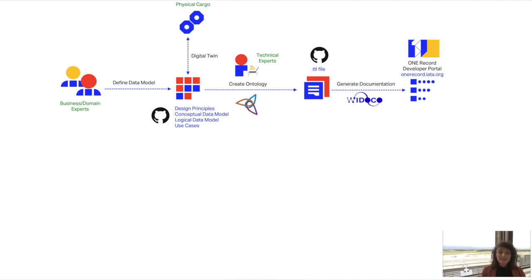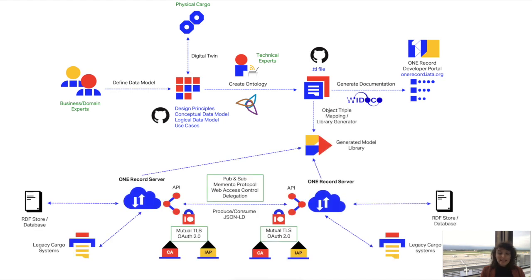These documents are open source and free to access. A group of technical experts from throughout the industry then work together to create the physical ontology starting from these documents. They use a tool called Protégé and generate a file in Turtle format. Starting from this Turtle format, we use a tool called Widoco that generates documentation available on our OneRecord developer portal. The next step is the mapping of the ontology to actual models from programming languages.